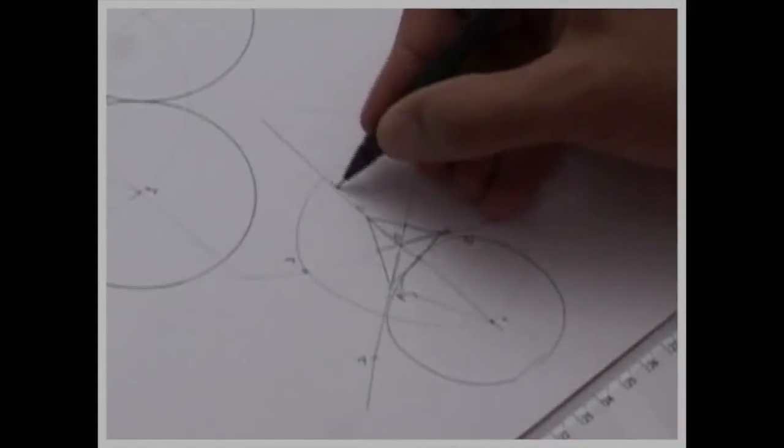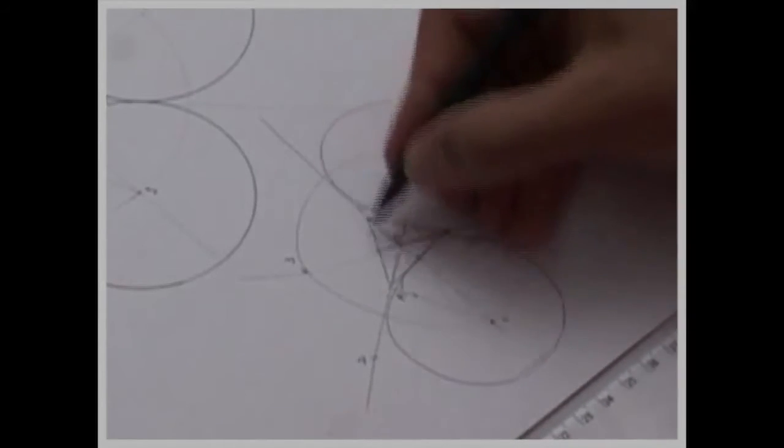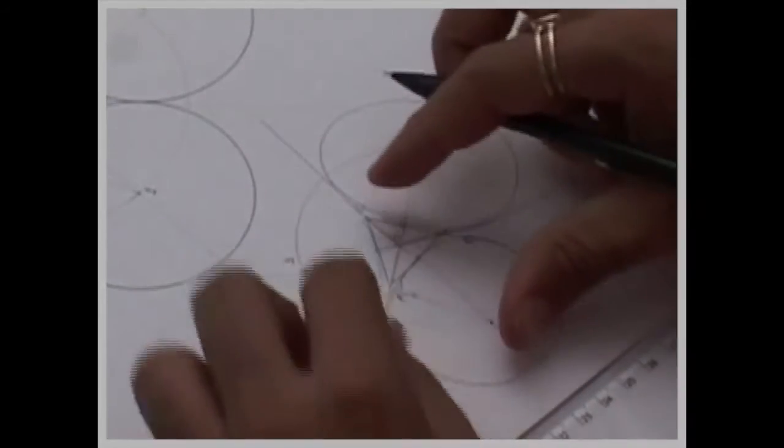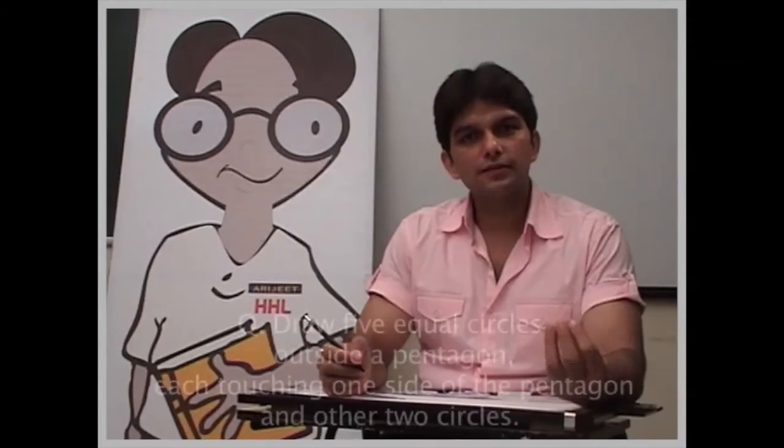Now we will take 2 to this radius, one circle. 3 to this radius, again we will draw one circle. So we can follow the same method. So just now we did four circles outside a square as well as three circles outside a triangle.